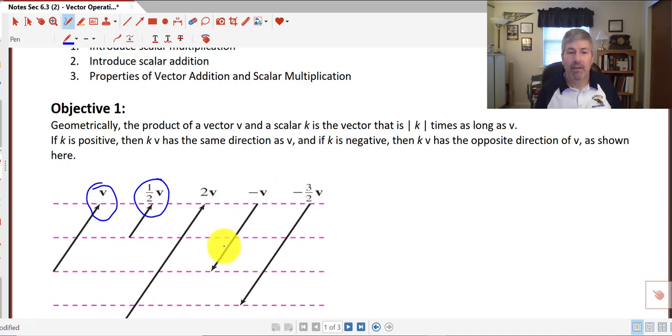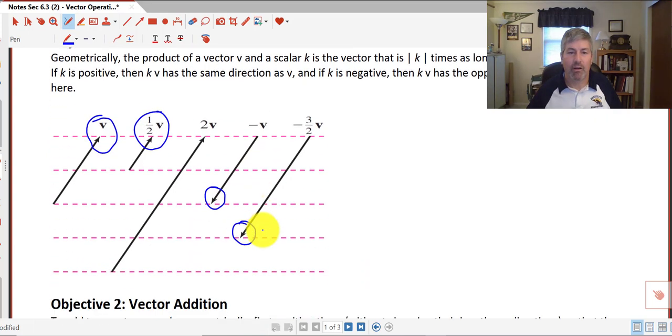Now the opposite of v has the same magnitude, but it's heading in the opposite direction. So take close note at your arrowheads because that shows you the direction of your vectors.